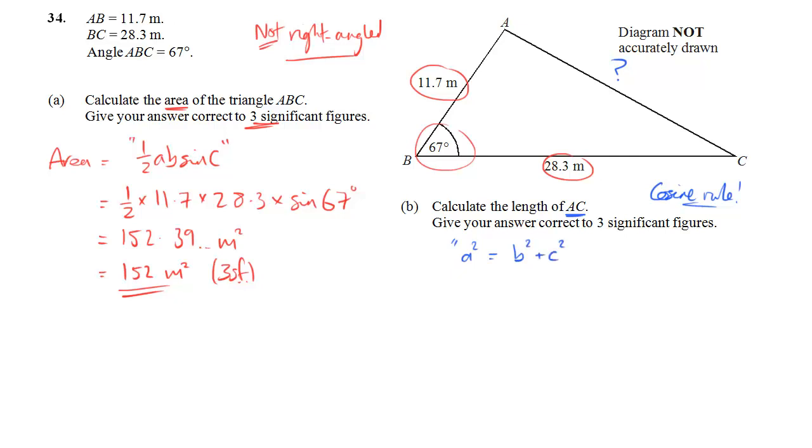So this is what it looks like on your formula sheet. A squared is B squared plus C squared minus 2BC cos A. The point is that A, your angle, and A, your side, are opposite to each other.